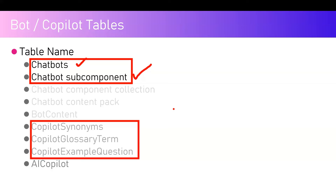There are also a couple of other tables like Copilot Synonyms, Copilot Glossary Term, and Copilot Example Question available in the backend. If you're making use of synonyms, glossary terms, or example questions, those particular tables will come into picture. There is also another table called AI Copilot, which lists copilots available for you to extend.